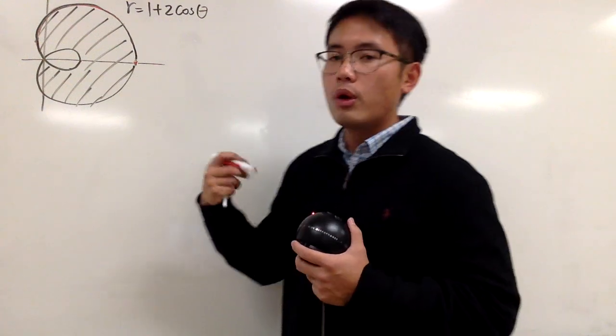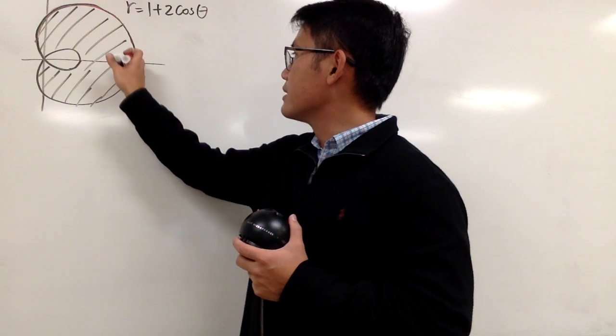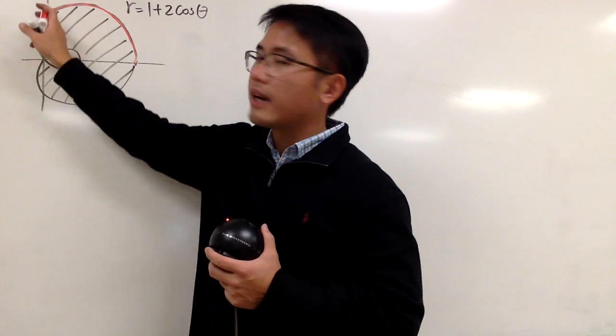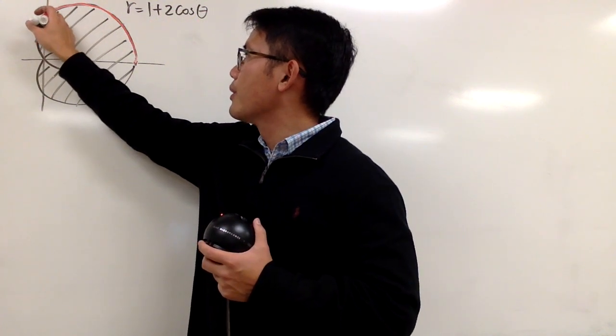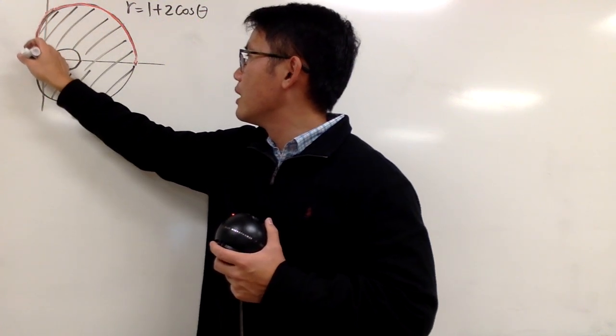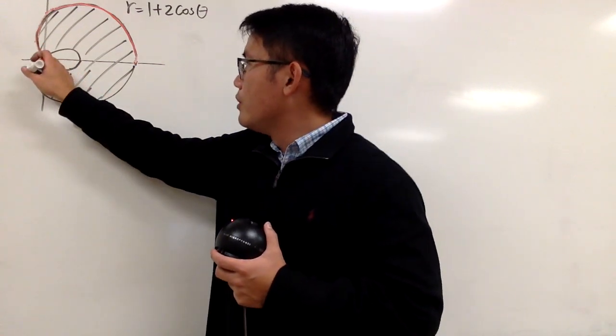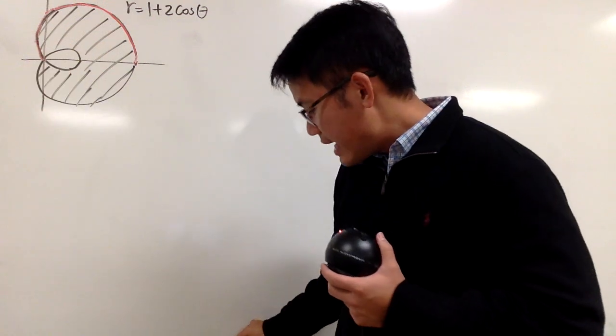And then you can plug in more angle values for theta and you'll actually see that the curve goes like this. Especially, this is when theta is equal to pi over 2, and then it's going to rotate and you are going to get back to the origin like that. And you have to be careful.